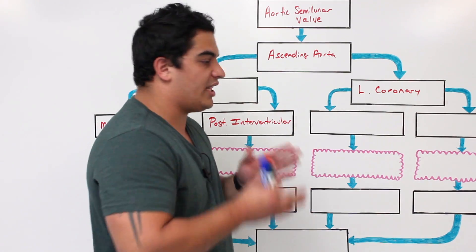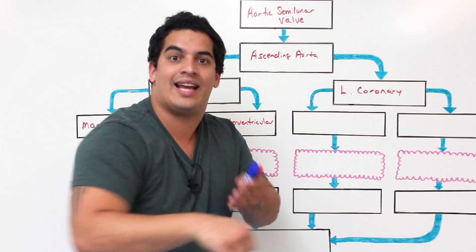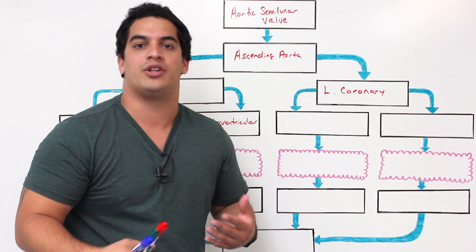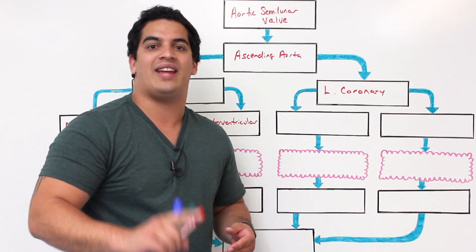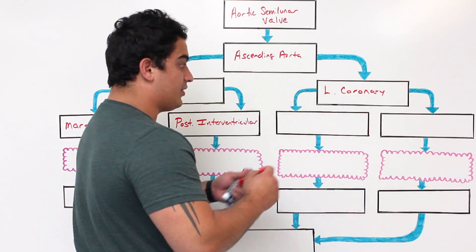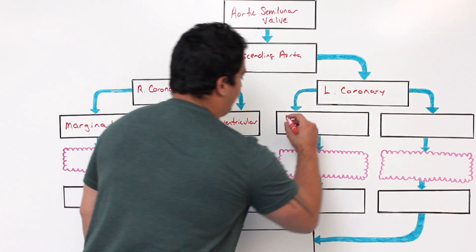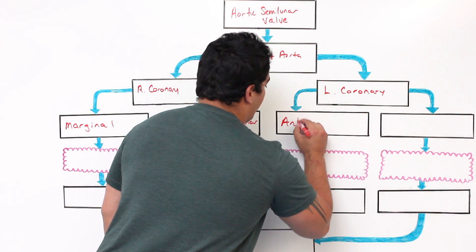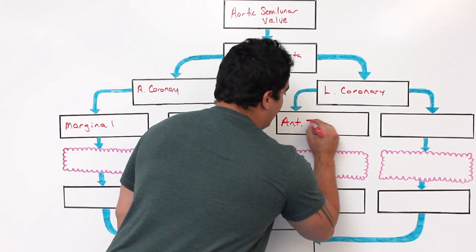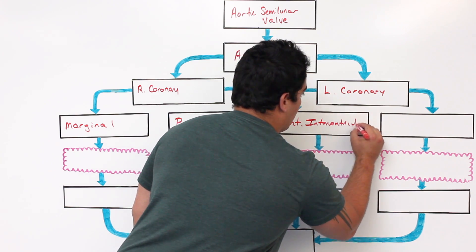The left coronary artery gives off two branches. One branch moves completely down and descends on the anterior aspect of the heart. This can be called the anterior interventricular artery or the left anterior descending artery — you might hear either term. I'll keep it consistent here and call it the anterior interventricular artery.